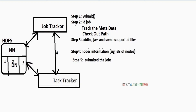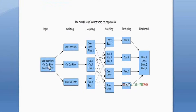What happens immediately after submission? Yes, immediately the task tracker starts map producing work. What is map producing work? For example, the simplest requirement: I want to count each and every word, how many times it is repeating — this is the requirement. So the mapper goes and reads the data from the data node.